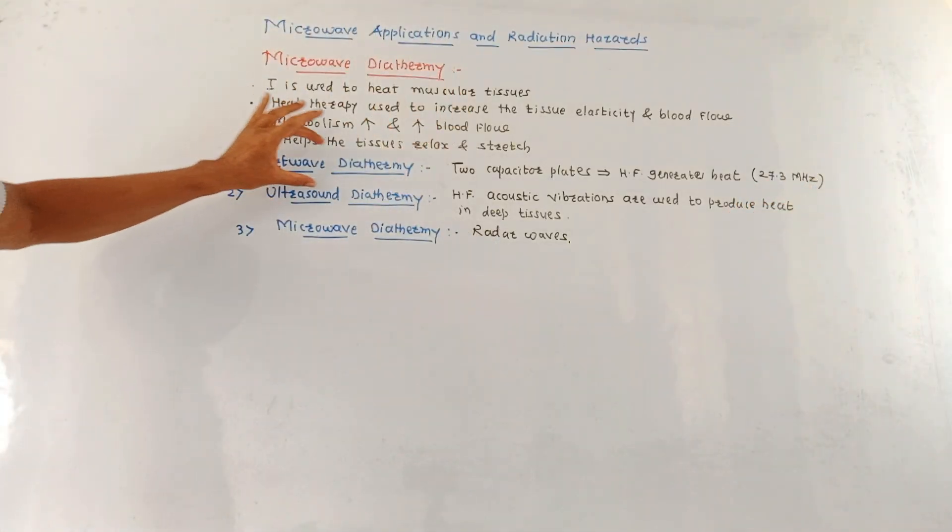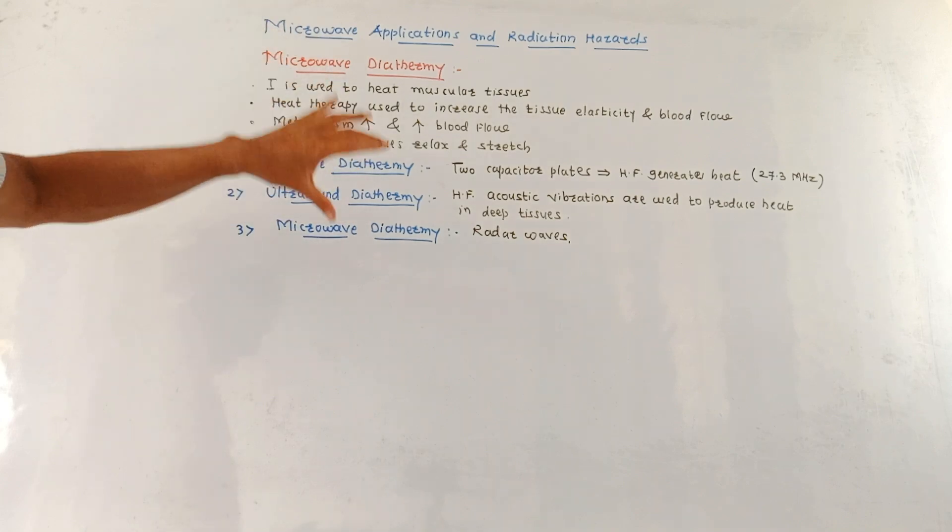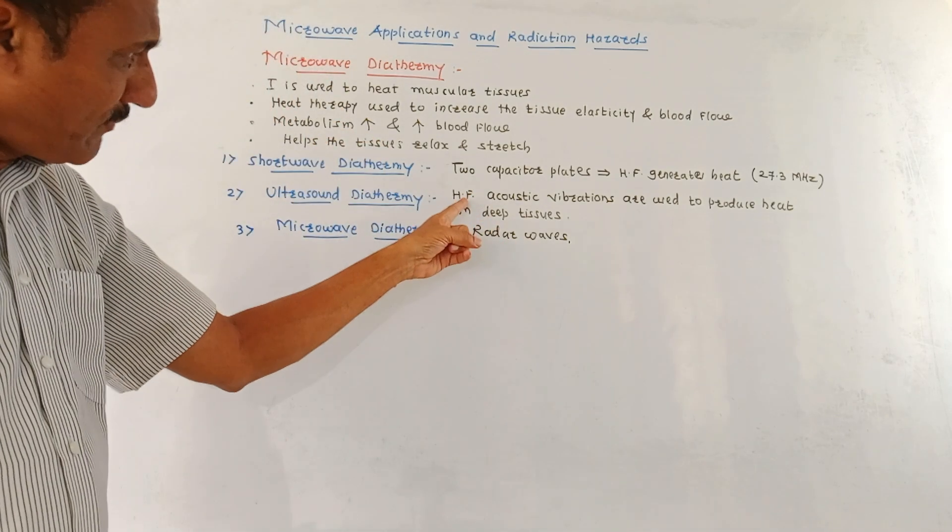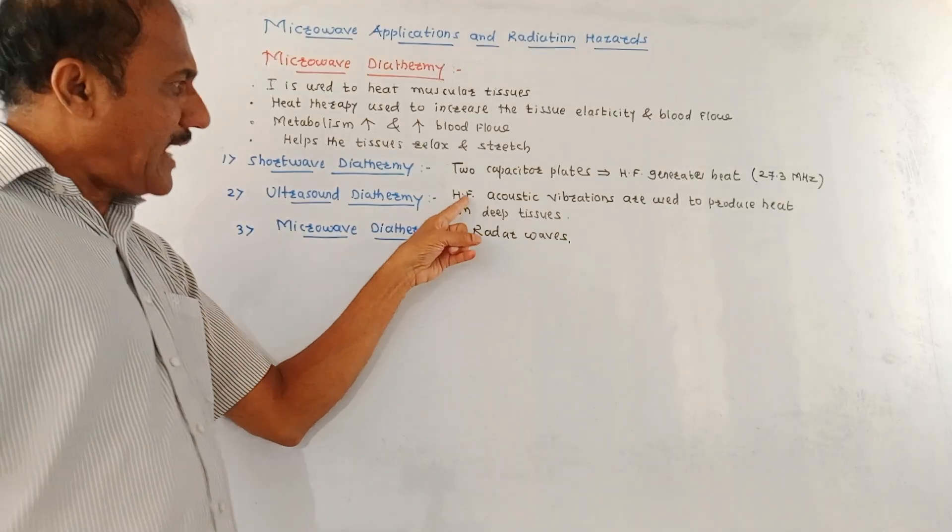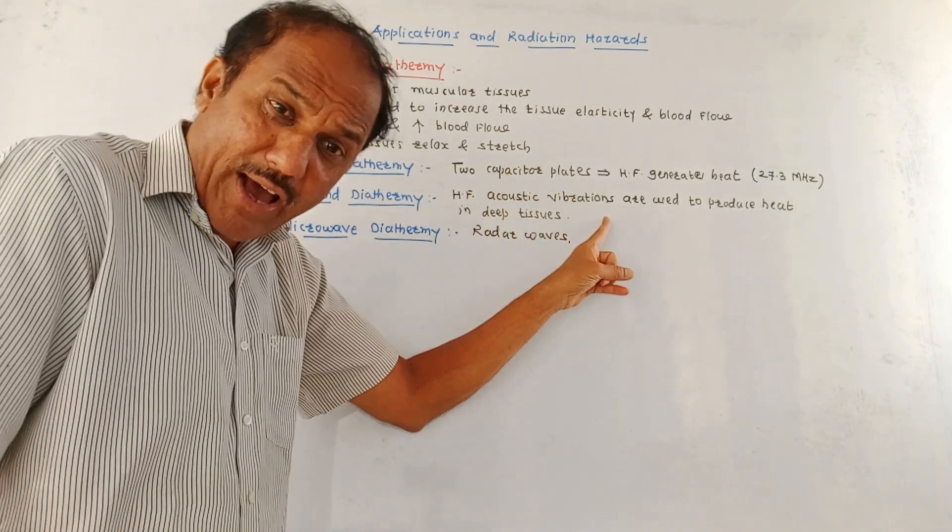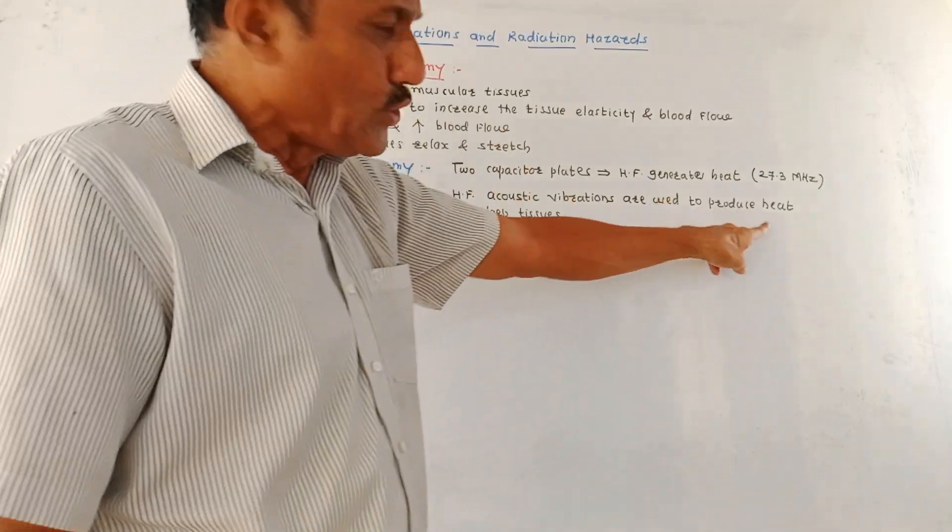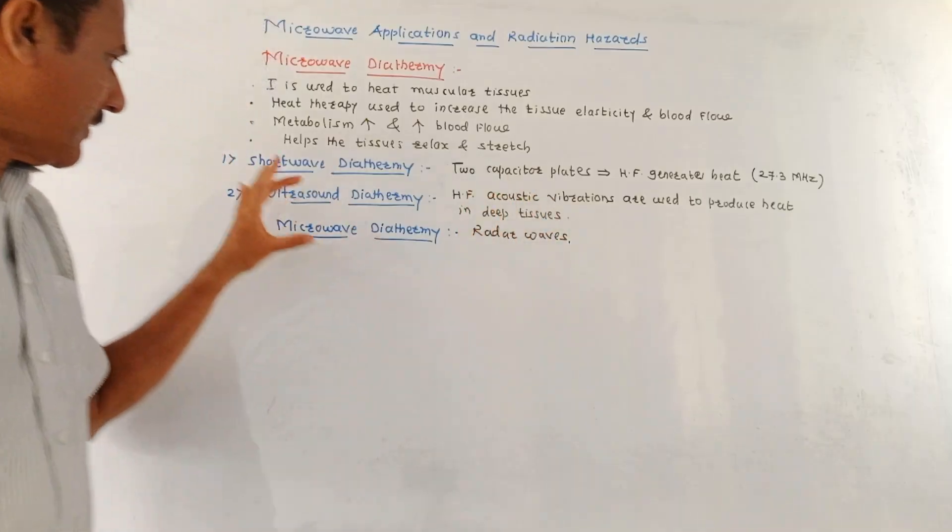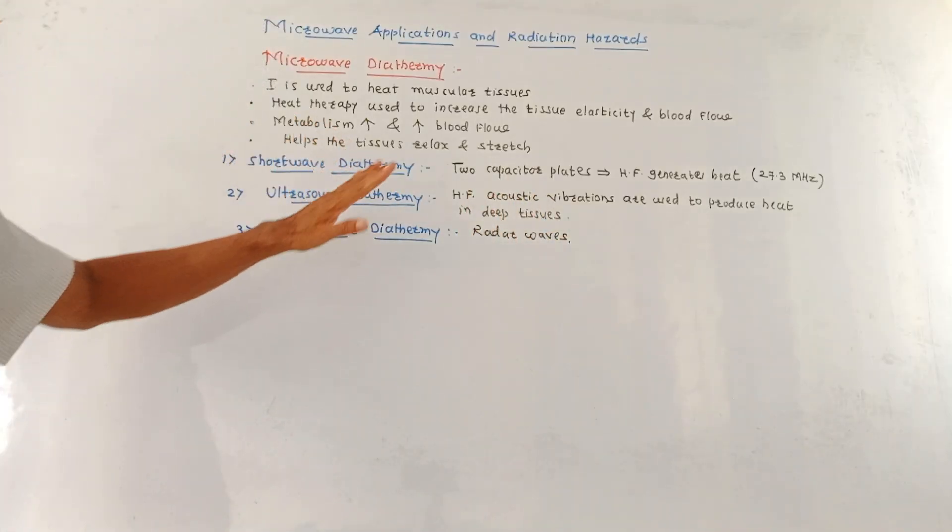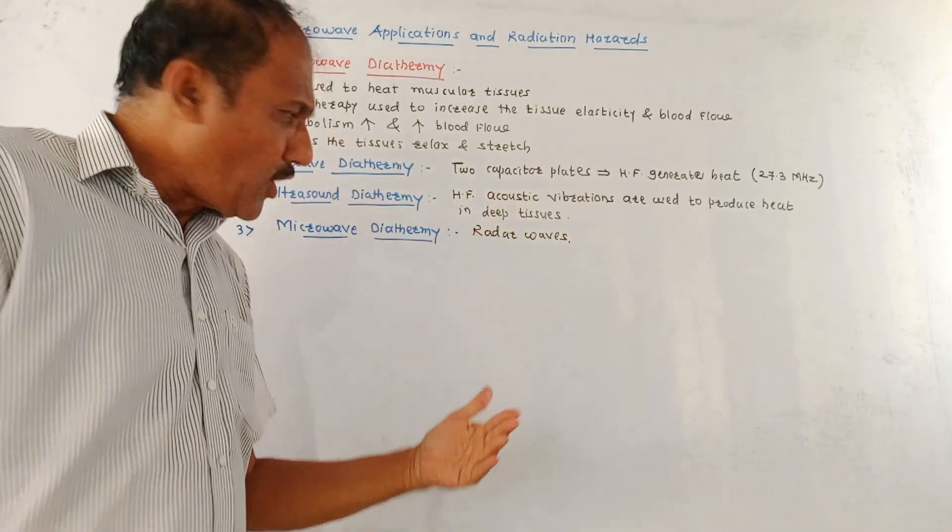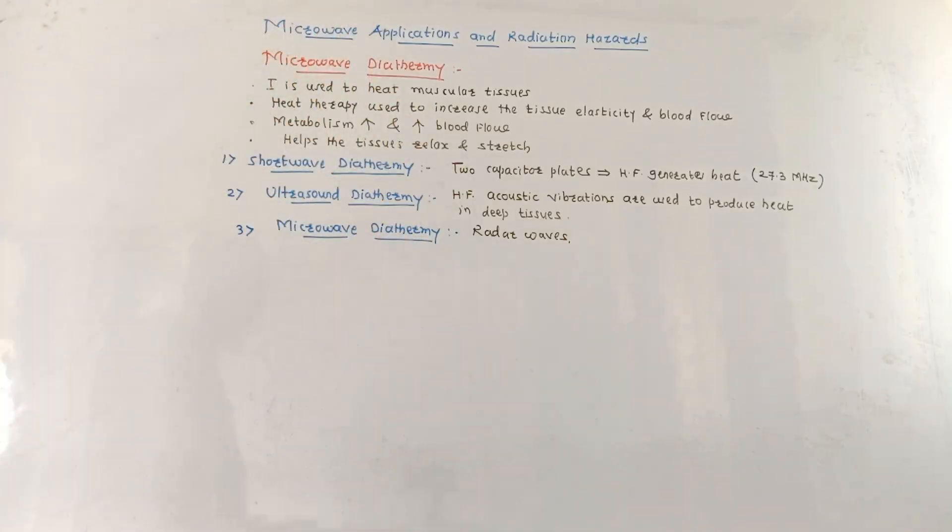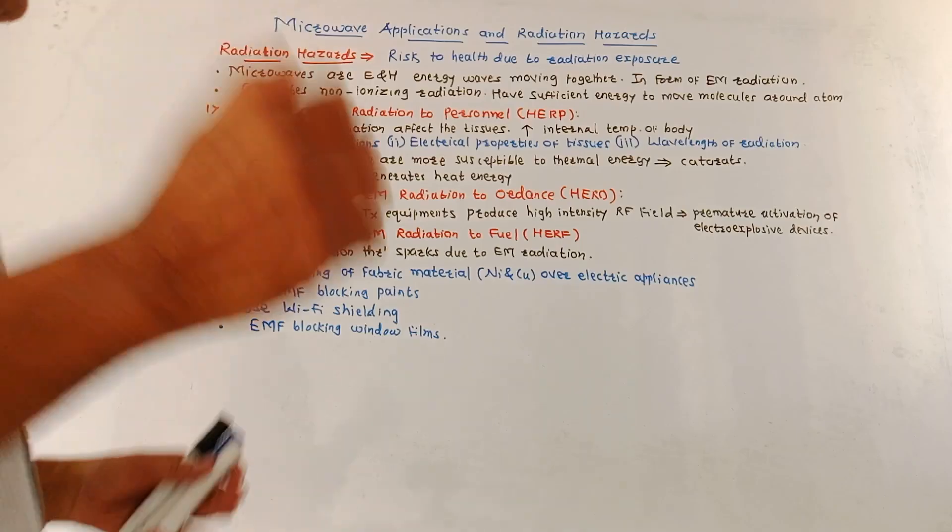The second is ultrasound therapy. In this method, since it is based on ultrasound, high frequency acoustic vibrations are produced and they are used to generate the heat in the deep tissues. Third is microwave diathermy. In this case, for the generation of heat, the radar waves are used. So this is about the biomedical application of the microwave.